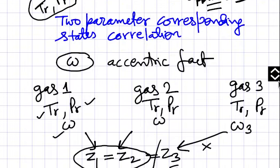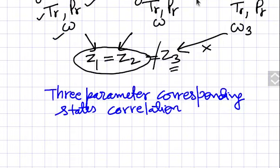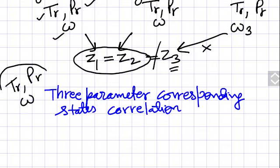This three-parameter correlation will fail if you take some gas 3 at the same reduced temperature and reduced pressure but with a different omega. In that case, Z1 and Z2 will be approximately equal to Z3, but it will not give that much refined result. So this is the basis of the three-parameter corresponding states correlation — you need all three parameters to correlate the gases.